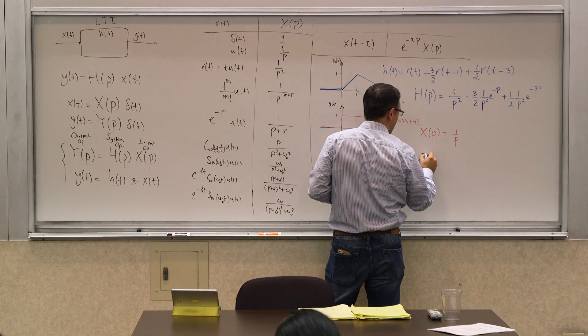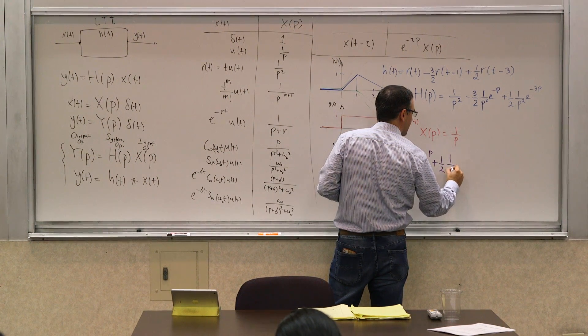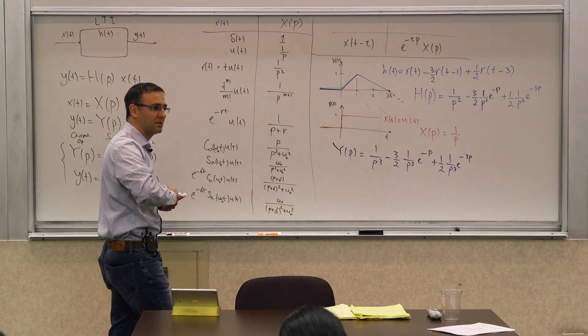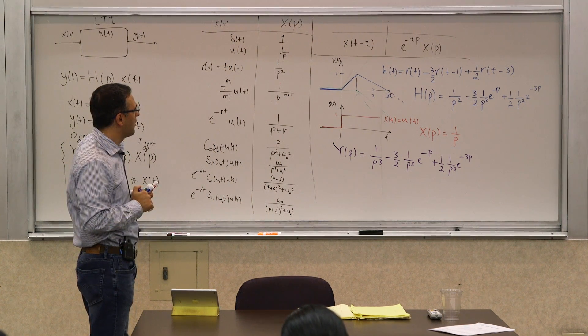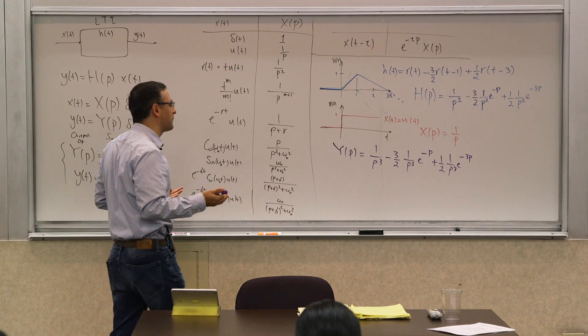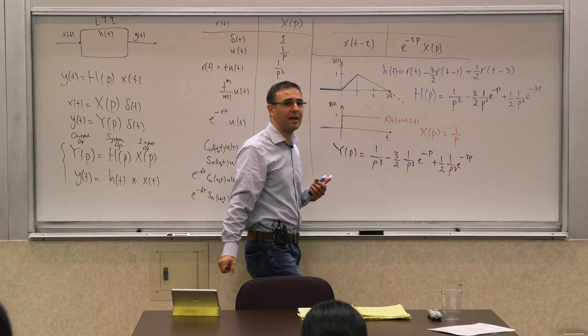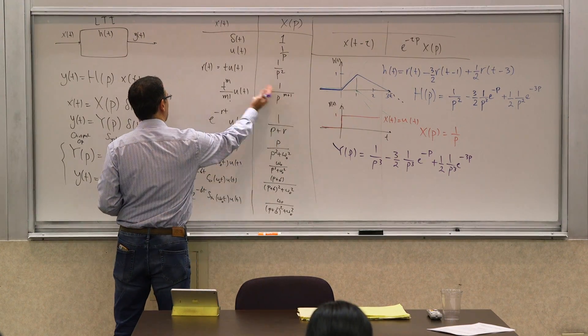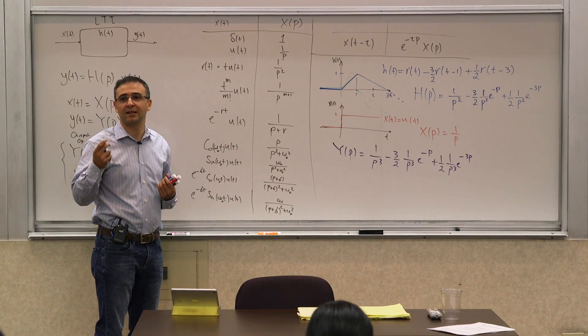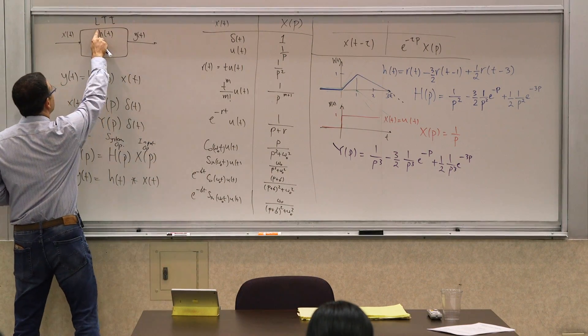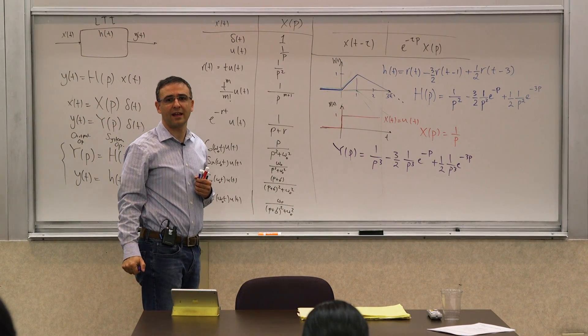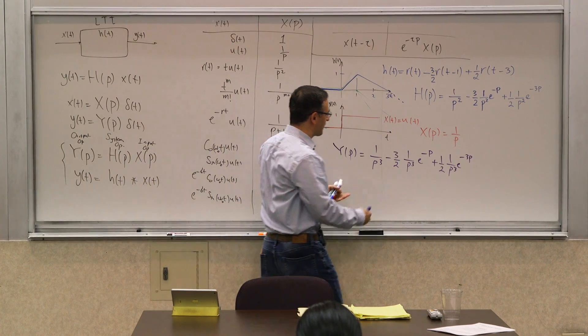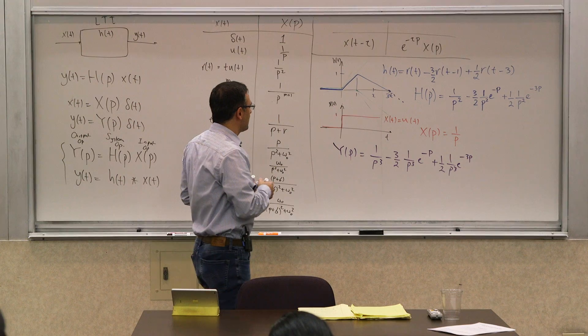So now this is Y of p. This is the operator. If this operator operates on an impulse, it generates the output. But we don't even need to do that, because now we can actually reverse it using these terms. And one more thing, which is basically the underlying assumption to all of these things, which comes from this L. The linearity implies superposition, exactly, right? Because you can deal with them independently.